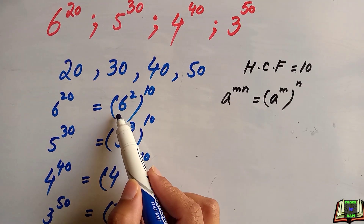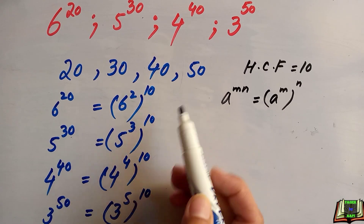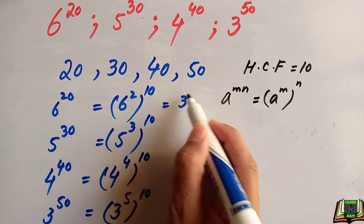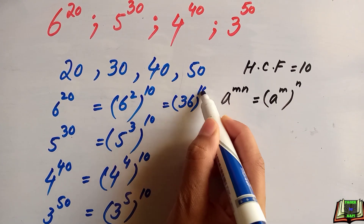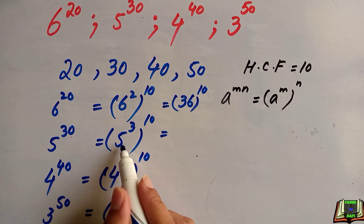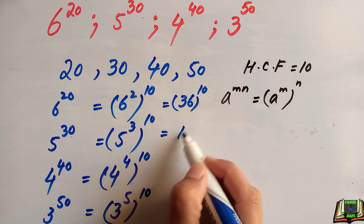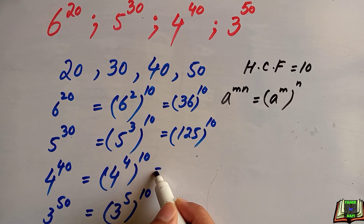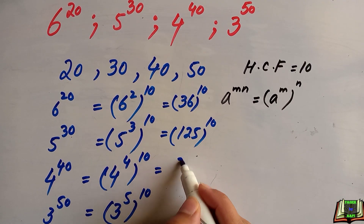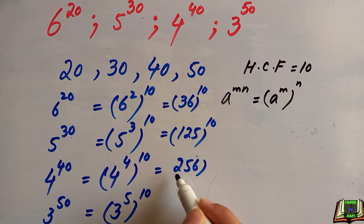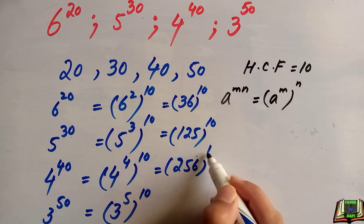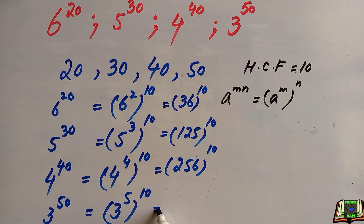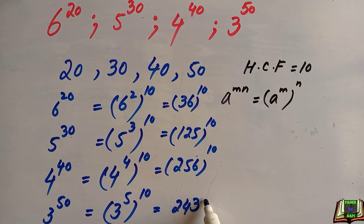Now let's solve the inner powers. 6 to the power 2 is 6 × 6 = 36, giving 36 to the power 10. 5 to the power 3 is 5 × 5 × 5 = 125, giving 125 to the power 10. 4 to the power 4 is 256 to the power 10, and 3 to the power 5 is 243 to the power 10.